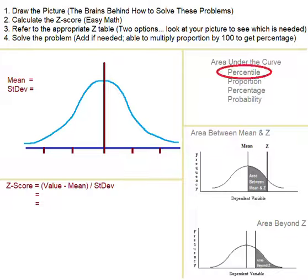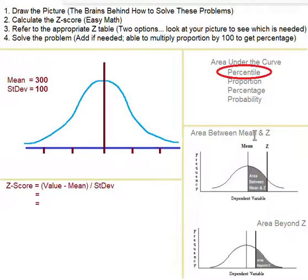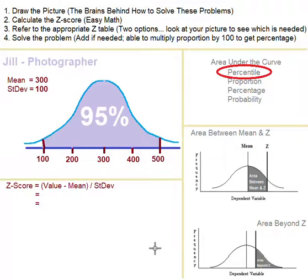Let's get started with percentile problems. Here's Jill — she is a photographer. On a photo shoot, on average she takes 300 pictures with a standard deviation of 100 photos. According to the empirical rule, 68% of the time she'll take somewhere between 200 and 400 photos, and 95% of the time she'll take somewhere between 100 and 500 photos.